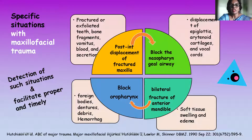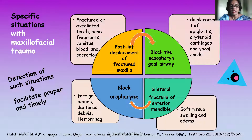Specific situations like posterior-anterior displacement of a maxillary fracture can block the nasopharynx, or a bilateral fracture of the anterior mandible can block the oropharynx. Associated with that, fractures of teeth, bone fragments, vomiting, blood secretions, foreign bodies like dentures, debris, and hemorrhage may appear in the oral or nasal cavity, with altered anatomy and soft tissue swelling and edema.